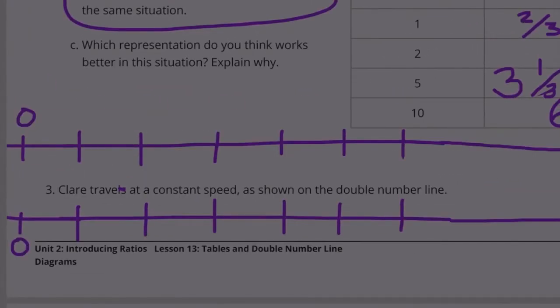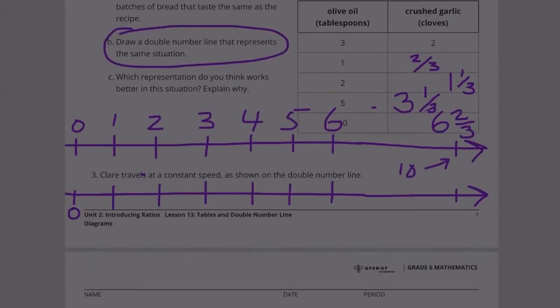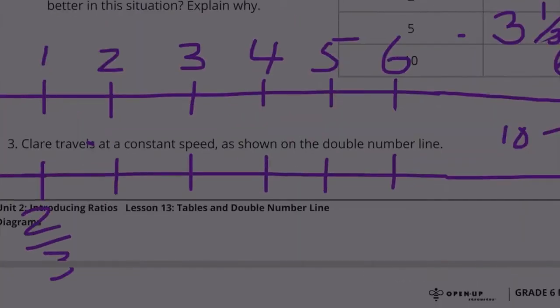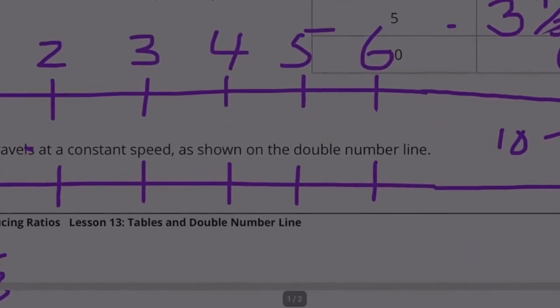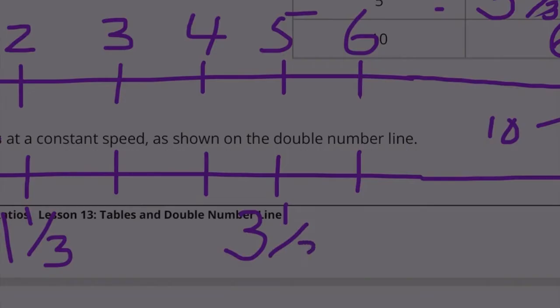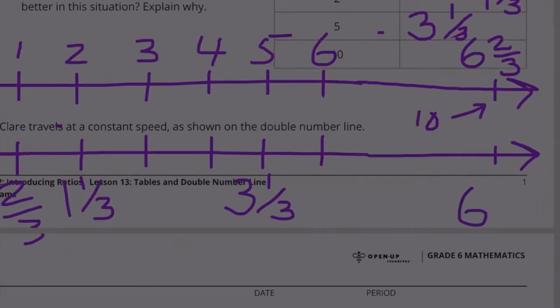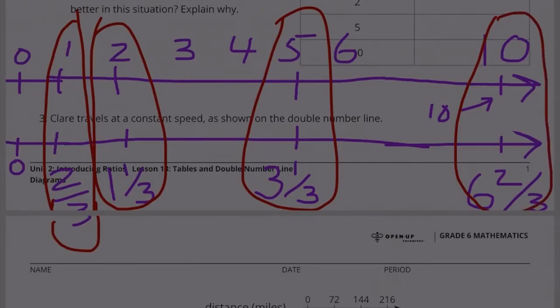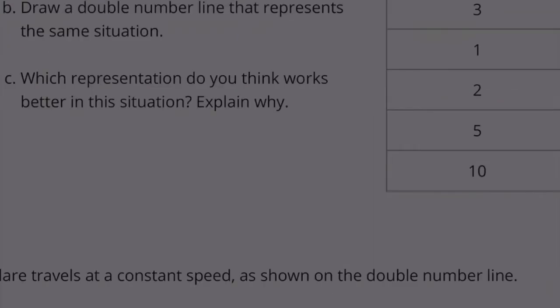Part B: Draw a double number line that represents the same situation. I'm going to start with zero, then 1, 2, 3, 4, 5, 6, and this one here is going to be 10. With one tablespoon of olive oil there's two thirds crushed garlic, so when there's two there's one and one third, when there's five there's three and one third, and when there's ten there's six and two thirds. Part C: Which representation do you think works better in this situation? Explain why.